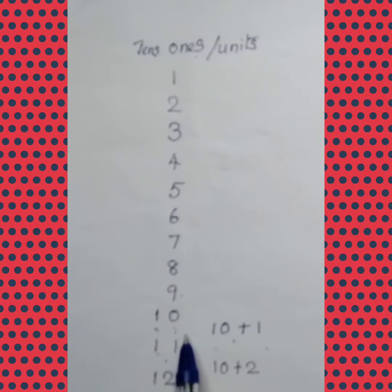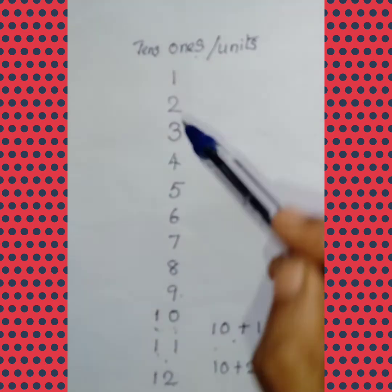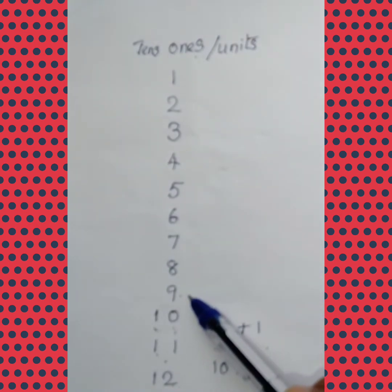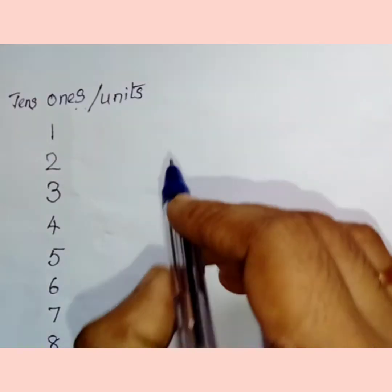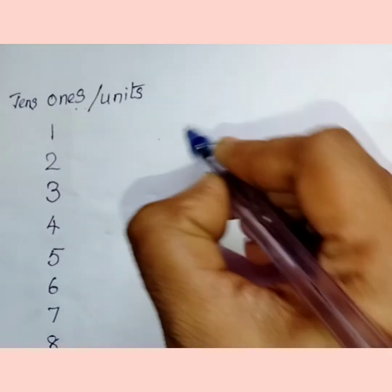Now coming back to our examples. Like this, 12, 13, 14, 15. It goes on till 99. As we have seen in our previous video, till 99 it is a two digit number.